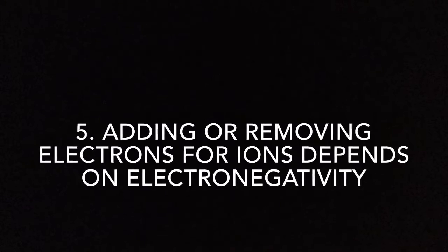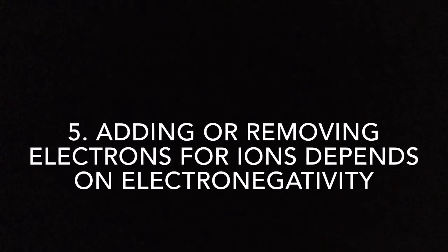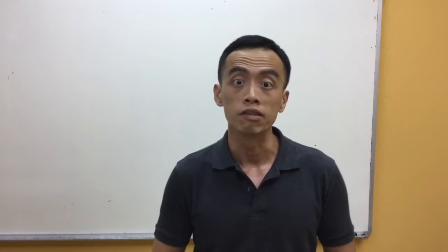Number 5: adding or removing electrons for ions depends on electronegativity. For cations, we remove electrons from the atom that is less electronegative, because it is more willing to give up the electron. For anions, when we add the electron in, we give the electron to the more electronegative atom because it likes the electron more.